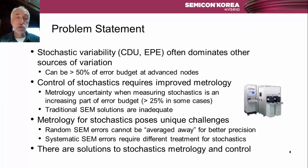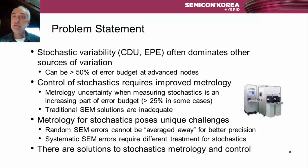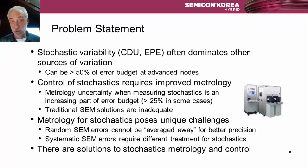The reason is that metrology for stochastics poses some unique challenges. Random SEM errors, when we only care about the mean response, are averaged away by making more measurements. However, they cannot be averaged away when we're trying to measure the variation. Systematic SEM errors also require different treatments for stochastics. We're going to talk about these today because there are solutions to stochastic metrology and control.